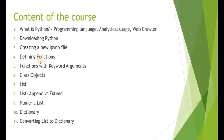We're going to talk about how to define functions. Defining functions is a systematic procedure whereby the function consists of a series of lines of code to be executed once the function is called. Then we're going to talk about functions with keyword arguments, which allow users to input a few optional arguments into the functions so they execute according to what has been added as input arguments.